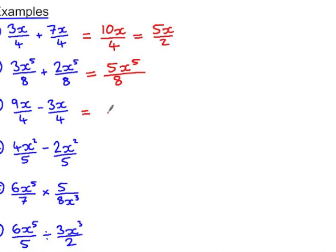Next we have a common denominator of 4. 9x take 3x is 6x. And this simplifies to 3x over 2. Then our common denominator is 5. 4x squared take 2x squared. That's 2x squared.